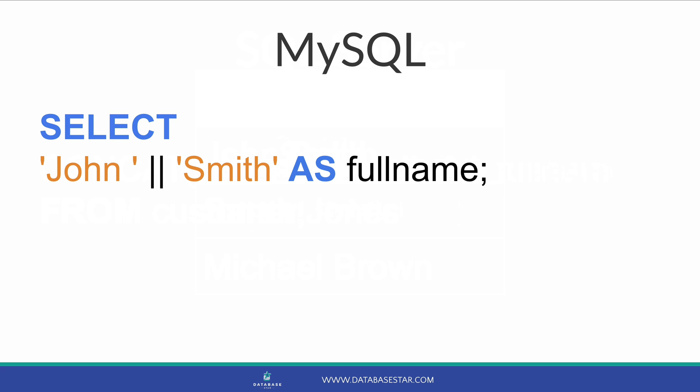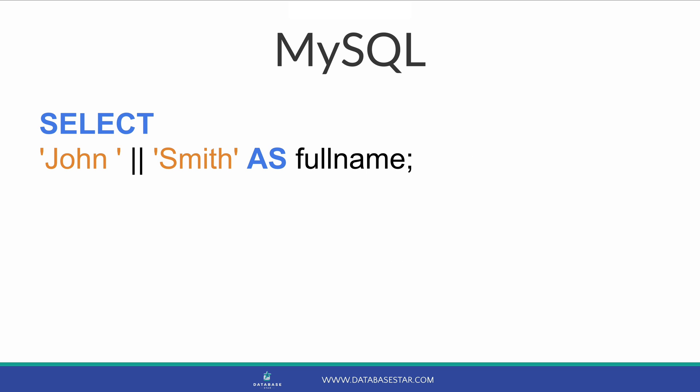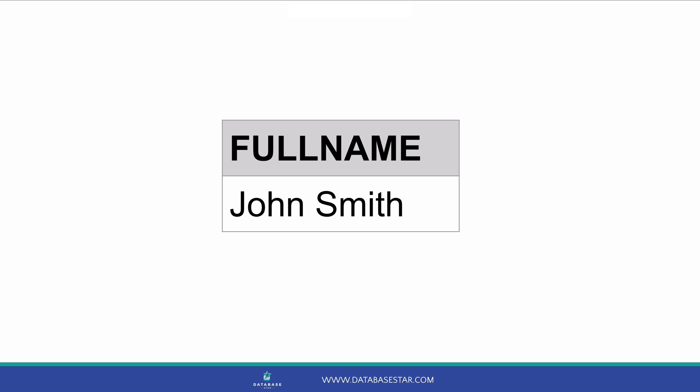In MySQL, you concatenate values using either double pipes or the CONCAT function. To use double pipes, you select two values with a double pipe character in the middle. However, to support the double pipe character for concatenation, you need to run a command to change the SQL mode. Setting the SQL mode to PIPES_AS_CONCAT will allow pipes to be used as concatenation characters. Alternatively, setting the SQL mode to ANSI will set a range of parameters including PIPES_AS_CONCAT. Once that option is set, you can run the SELECT query with pipes and see the combined name.